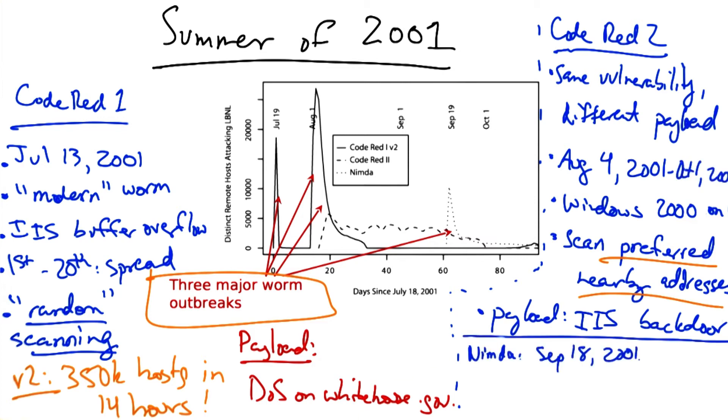Nimda was released on September 18th, 2001, and was interesting mostly because it spread using multiple propagation vectors. It was effectively multimodal. So in addition to using the same IIS vulnerability as Code Red 1 and Code Red 2, there were some additional vectors that it used.